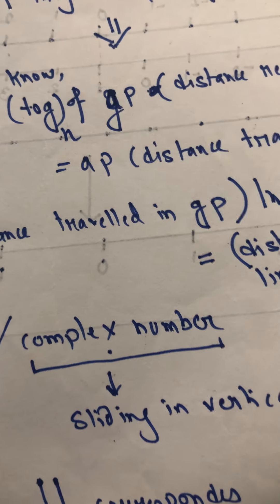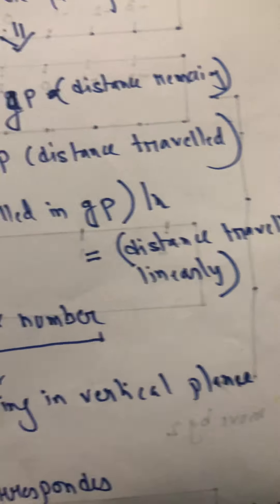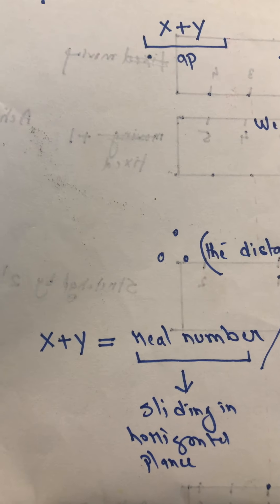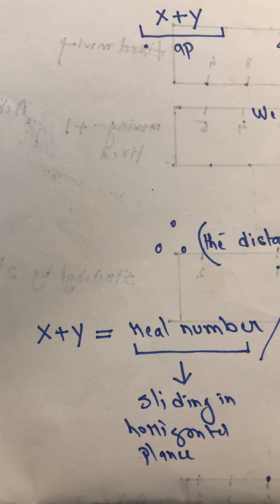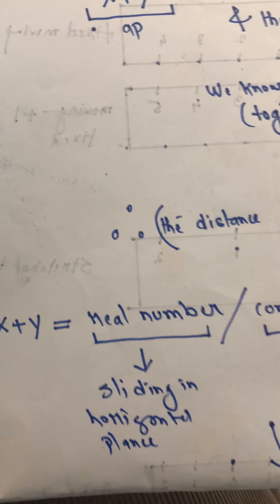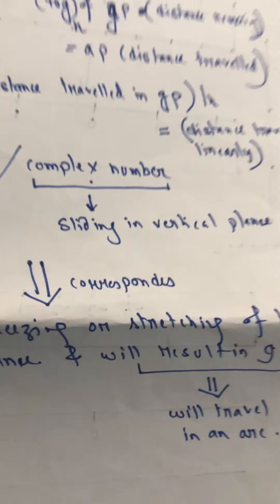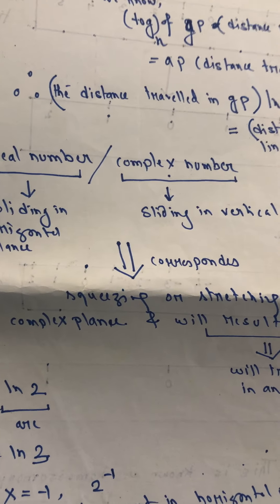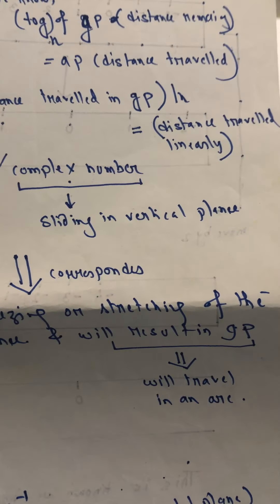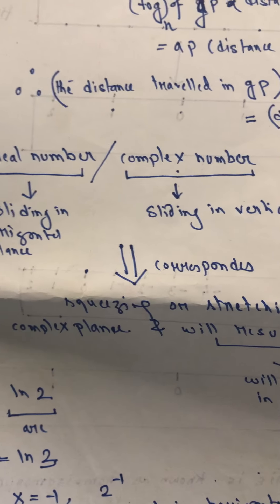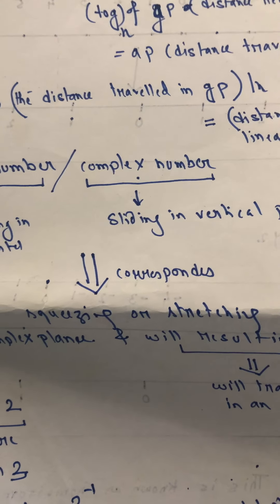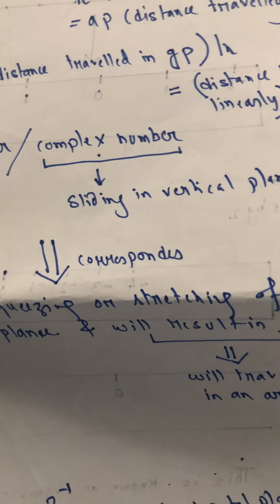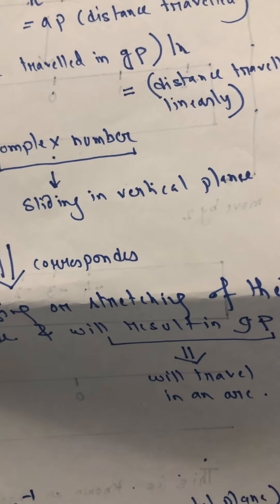If it takes place along the complex number line, that means the sliding action will be along the vertical plane. And if it happens in the real number line, that means the sliding action is taking place in the horizontal plane, and that corresponds to some sort of squeezing or stretching of the complex plane, and that results in the GP. And because there is some sort of stretching or squeezing, the output is some sort of an arc.